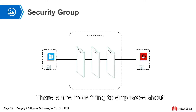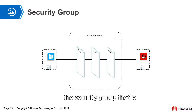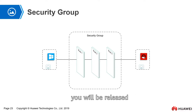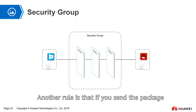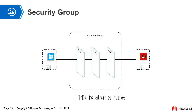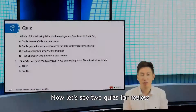One more thing to emphasize about the security group: if a packet matches the allow rules, it will be released. Another rule type is that if a packet matches the deny rules, it will be rejected. Both allow and deny rules exist within the security group framework.